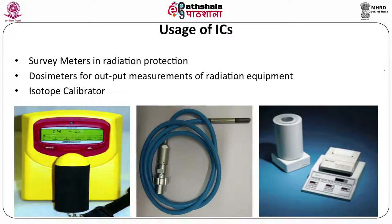Ion chambers are used as survey meters around radiation installations, to survey the amount of radiation for protection purposes. They are extensively used as dosimeters for radiation output measurements of equipment used in radiation therapy or radiology — for example, x-ray machines and radiotherapy machines. Similarly, ion chambers are also used as isotope calibrators, to determine the amount of radioactivity of a radioisotope being used in nuclear medicine or radiotherapy.